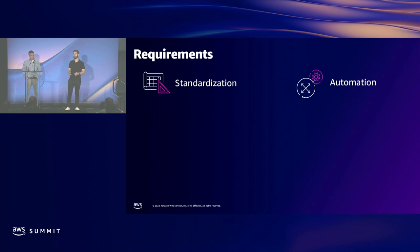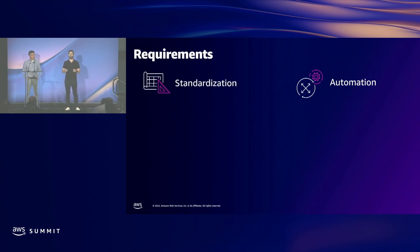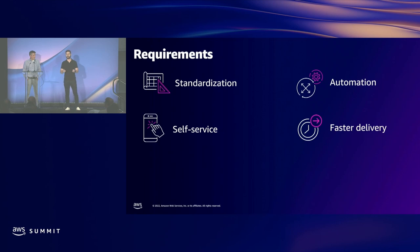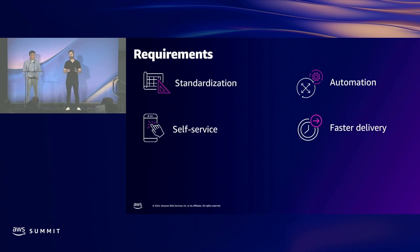We wanted to move all manual processes to automated processes — no manual work was going to be acceptable. Just like we ask our product engineers to fully automate their deployment pipelines, we wanted to do the same for our infrastructure. We also wanted to move from a ticketing system to a self-service GitOps repo. This allows more people to contribute in a self-service manner — not opening a ticket and waiting for someone else, but empowering individuals to contribute themselves.